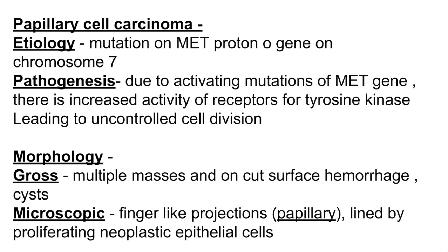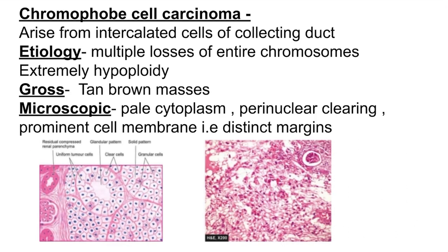Grossly, you can see multiple masses, and on the cut surface again you can see hemorrhage and necrosis. Microscopically, as the name suggests, you can see papillary foldings — finger-like projections lined by proliferating neoplastic epithelial cells. This arrangement is called papillary arrangement and is characteristic of papillary cell carcinoma.